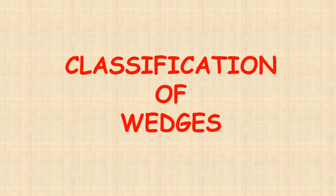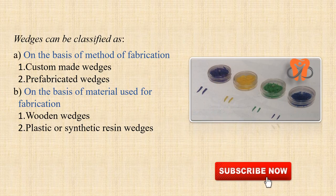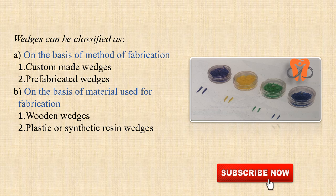Coming to classification of wedges. Wedges can be classified on the basis of method of fabrication as custom made wedges, that means the ones which we make ourselves, and prefabricated wedges. On the basis of material used for fabrication, they may be wooden wedges or plastic or synthetic wedges. In the picture you can see a prefabricated wedge which is of plastic material.